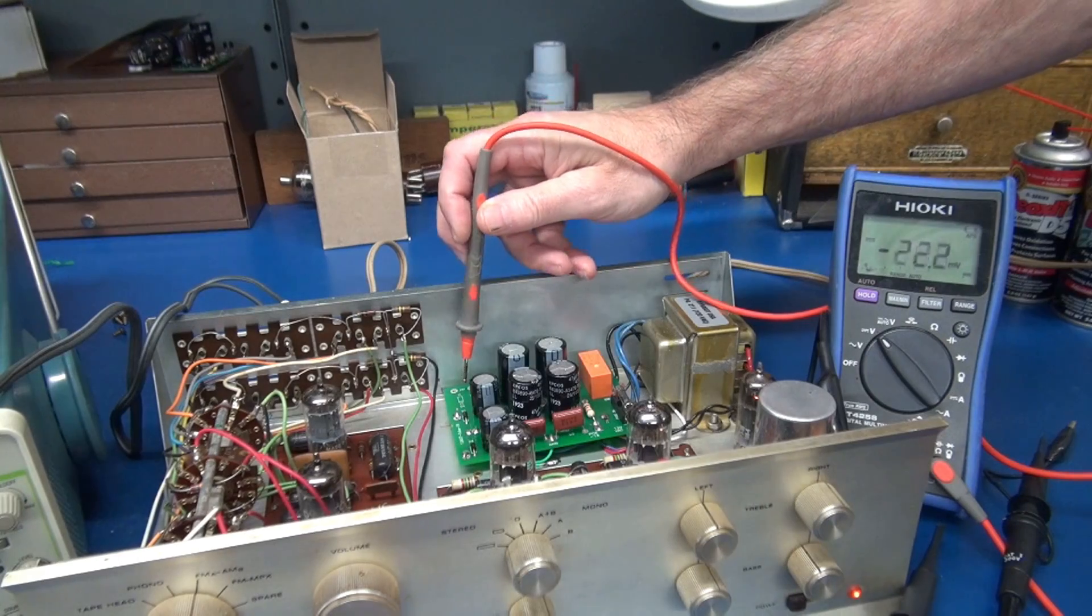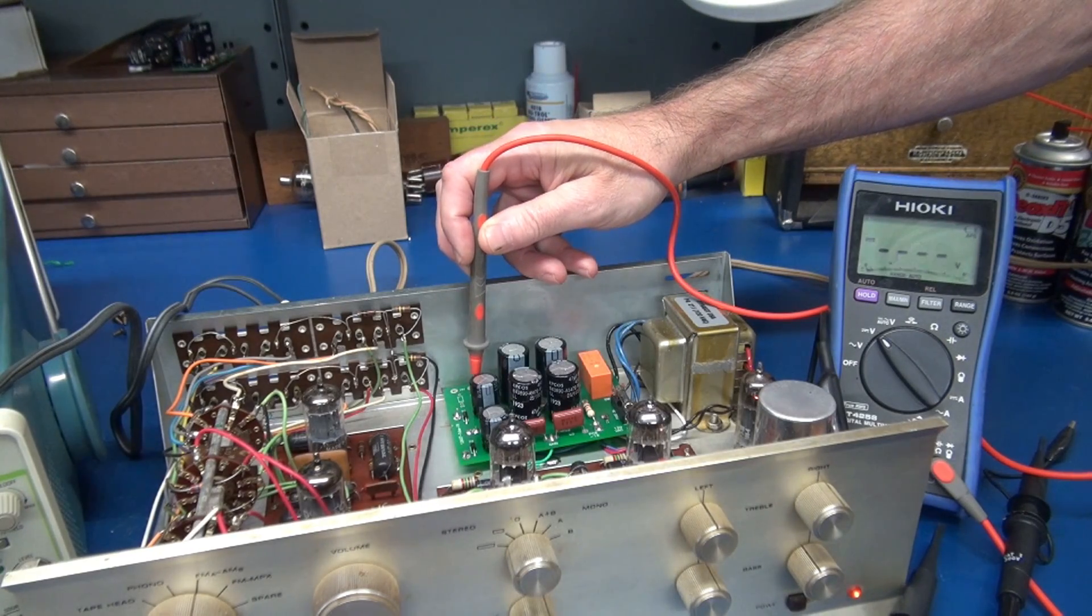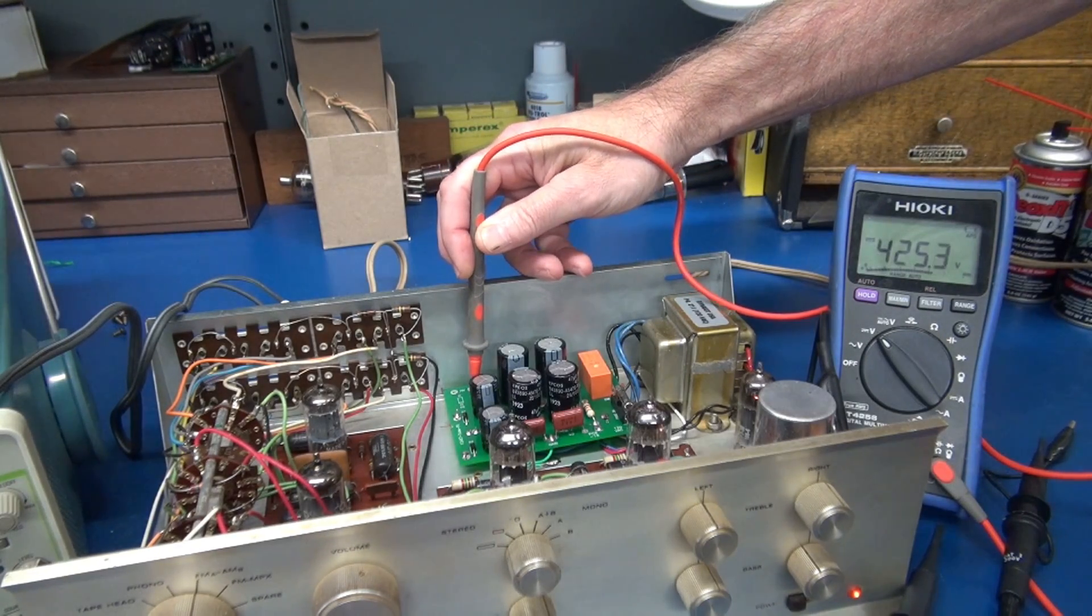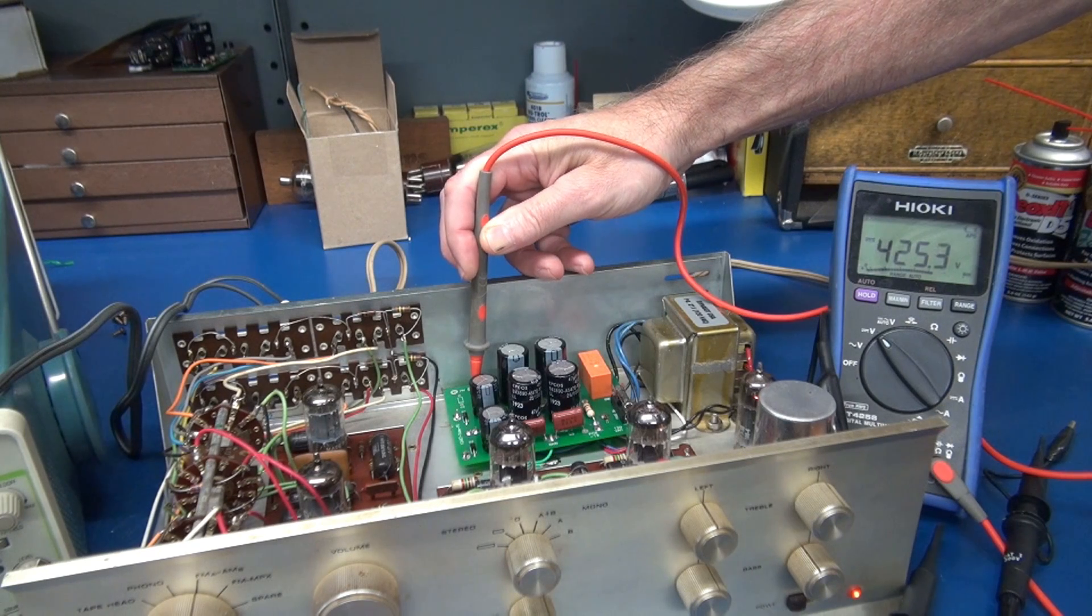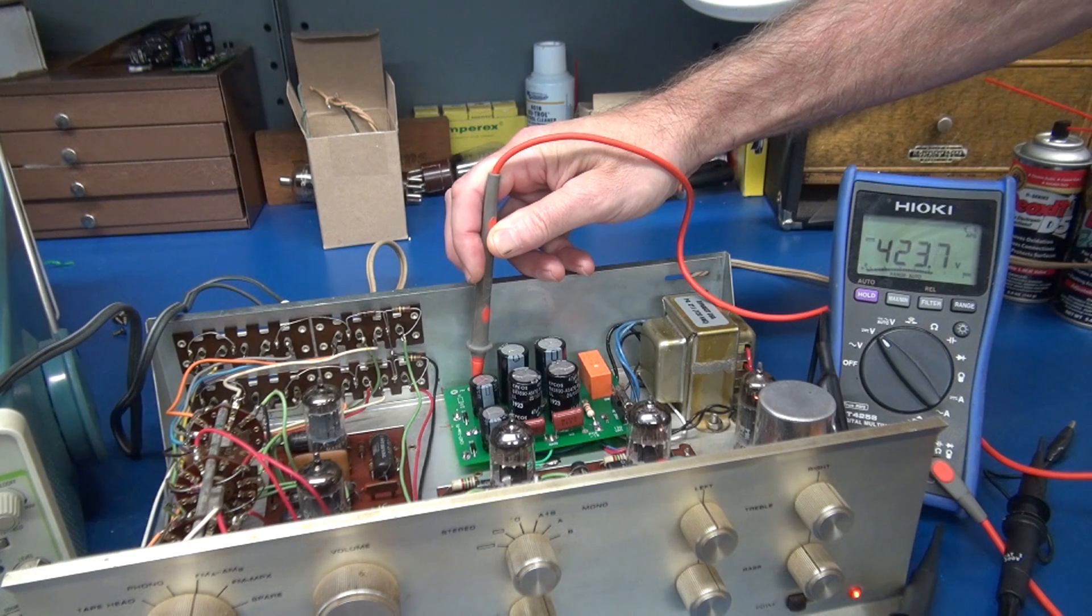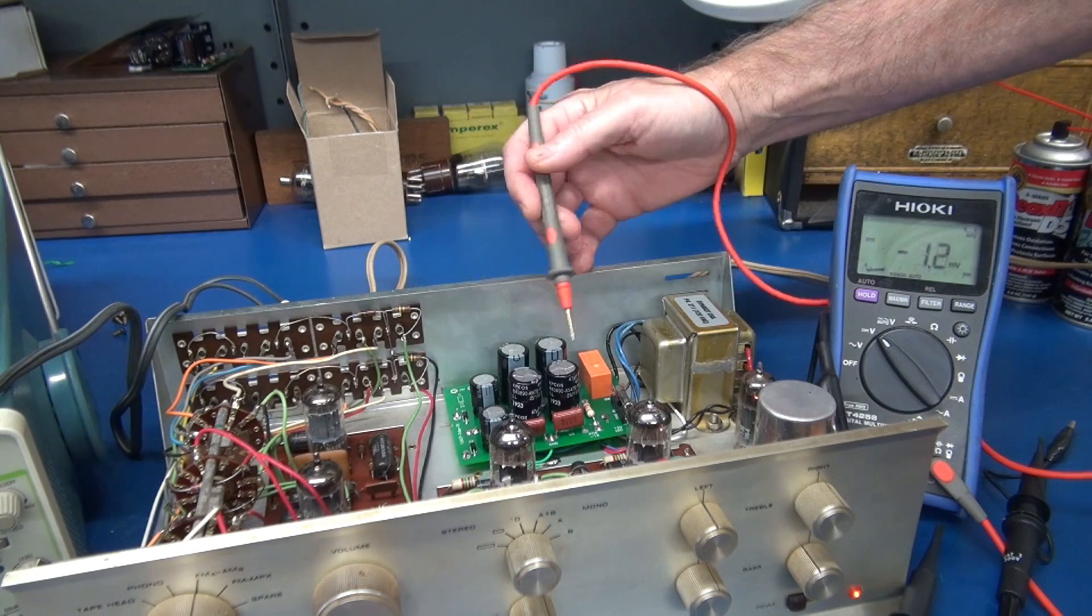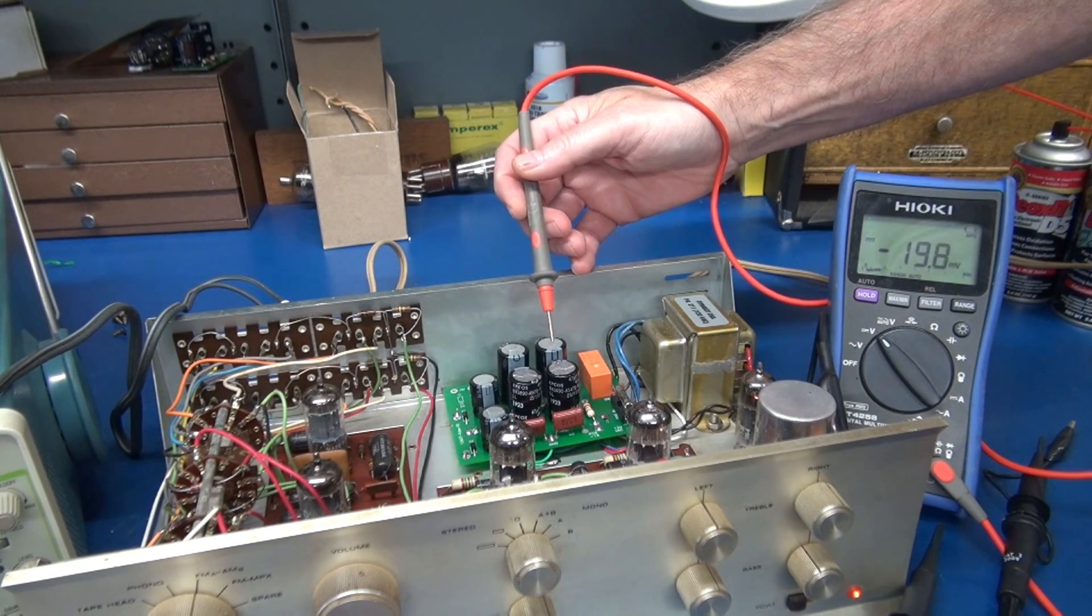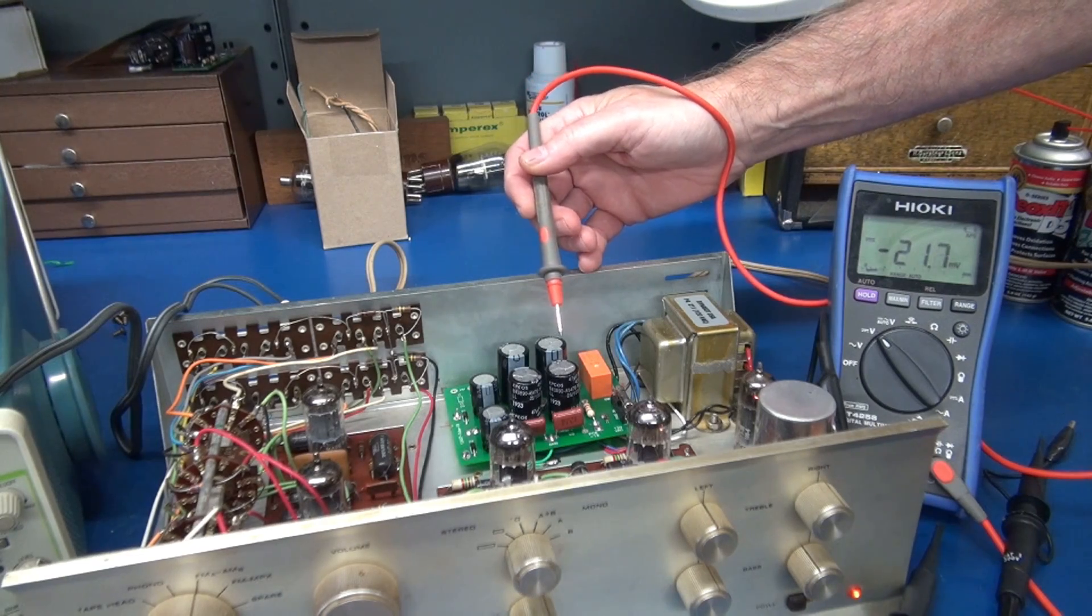It has a D-Lab power supply board built in, so I have access to the high voltage on a test point. You can see we have 425 volts DC. If you do not have an updated power supply module in your PAS, you can measure this on the filter cap. Just be careful.